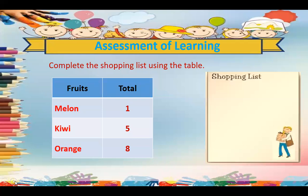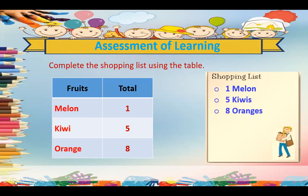Next, assessment of learning. Complete the shopping list using the table. The table shows fruits and total: melon, kiwi, and orange. We will make the shopping list: 1 melon, 5 kiwis, and 8 oranges.